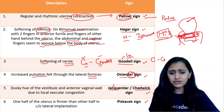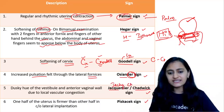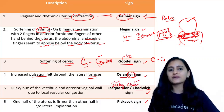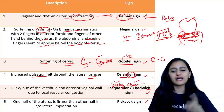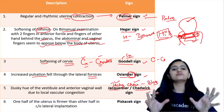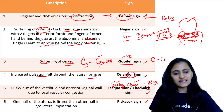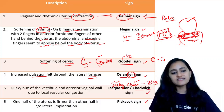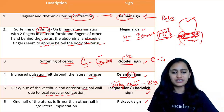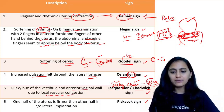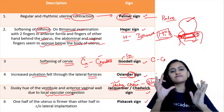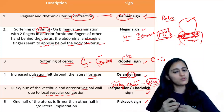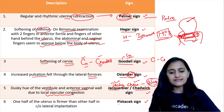Next is Jacquemier sign, also known as Chadwick sign. Remember it as Jackie Chan: Jacquemier = Jackie, Chadwick = Chan. Imagine Jackie Chan wearing a blue shirt — Jacquemier or Chadwick sign is the dusky hue or blue color of the vestibule and anterior vaginal wall due to local vascular congestion. Jackie Chan = blue color of the vestibule and anterior vaginal wall due to congestion.